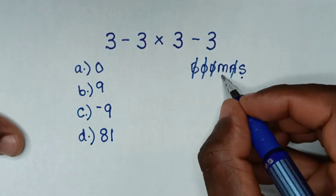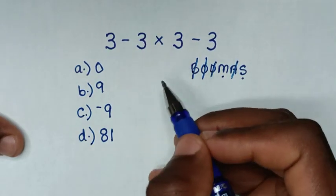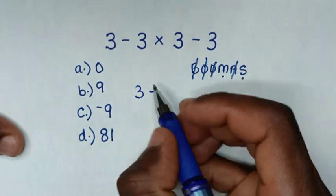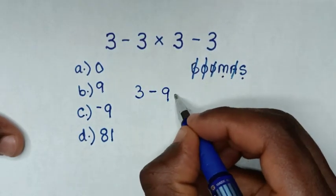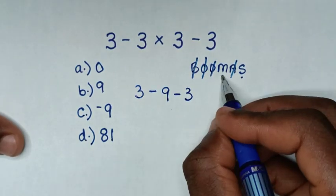So we start with multiplication. We have 3 × 3, which is 9. So it becomes 3 - 9 - 3. Now after we've dealt with multiplication,